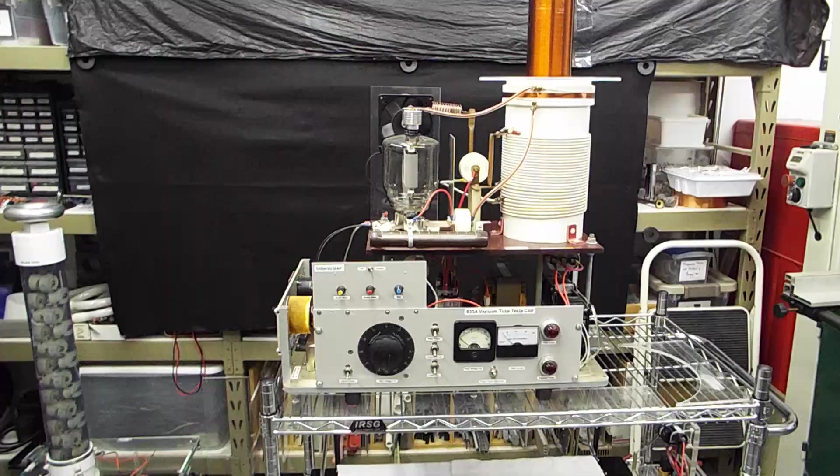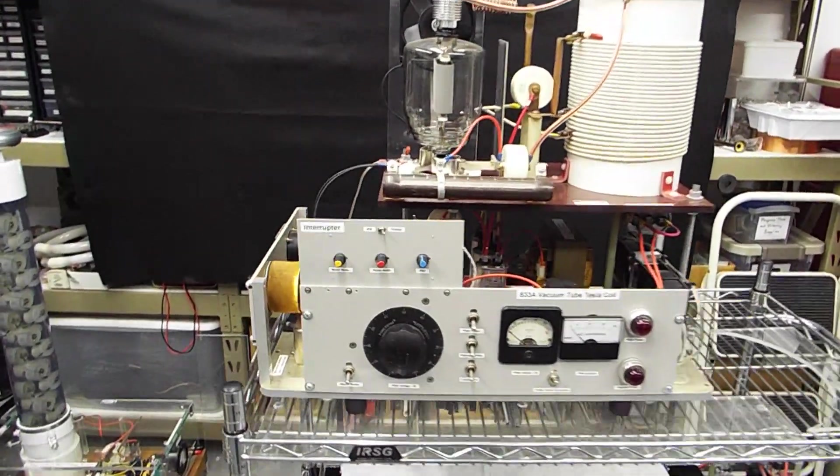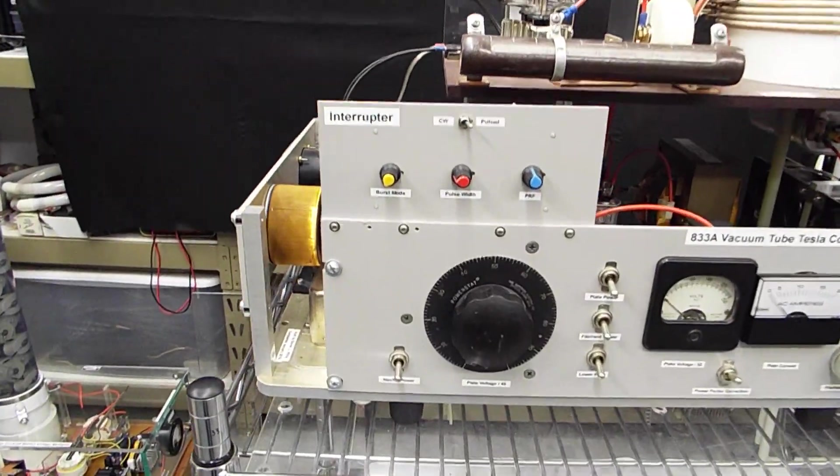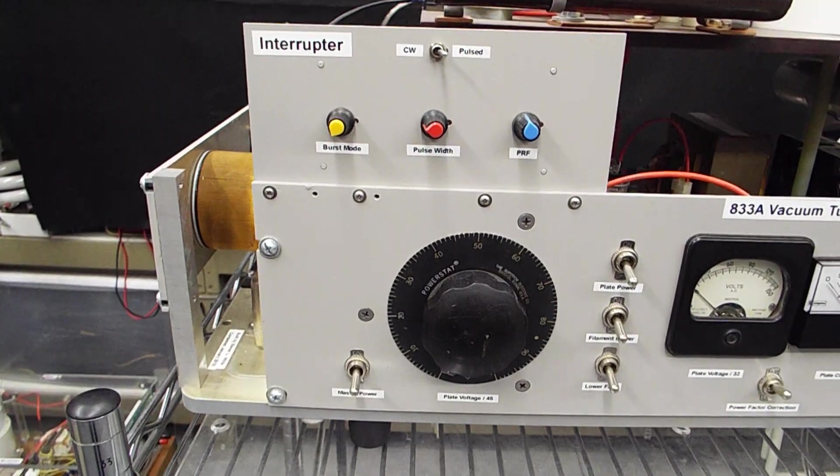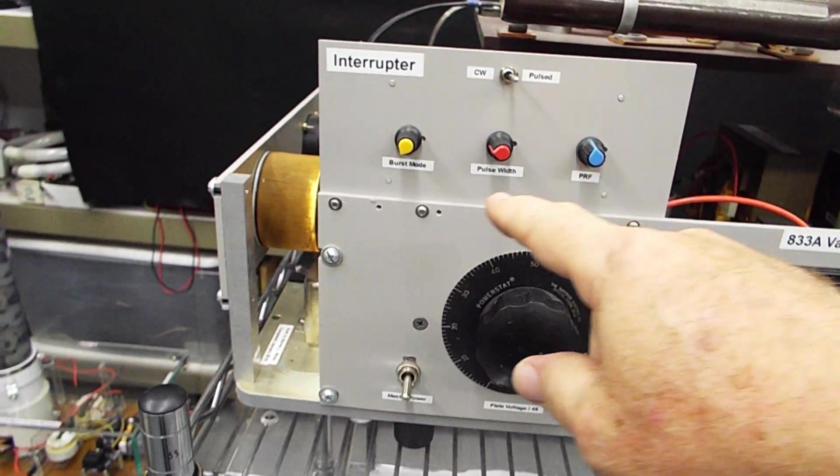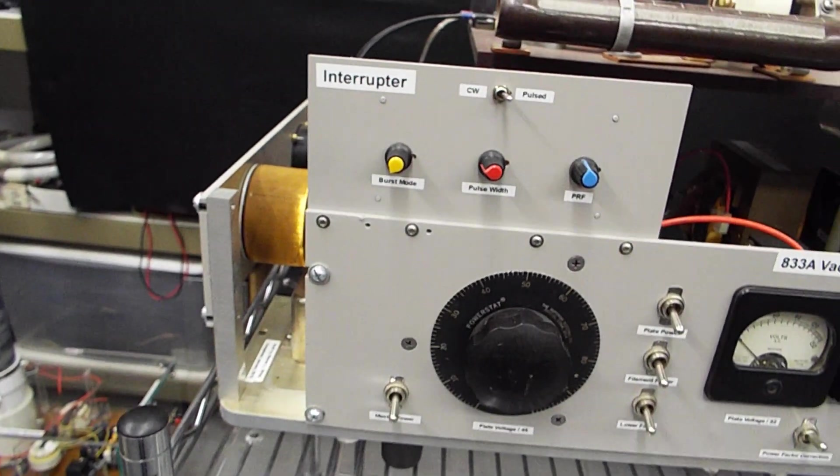Let's start with the front panel here. This top unit right here, this is the interrupter unit.